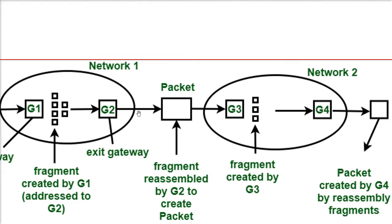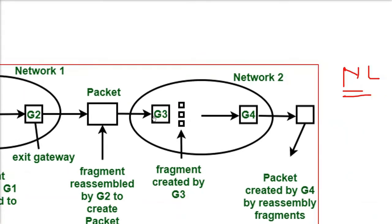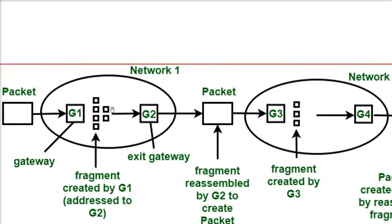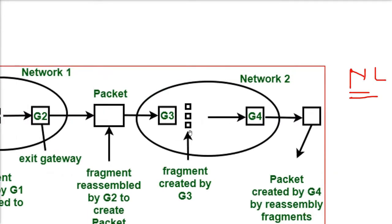Now, reassembly is done again. This is coming to G3. So here, you see G1 has divided it into six fragments. G3 has divided it into three fragments. So it depends on the network also.